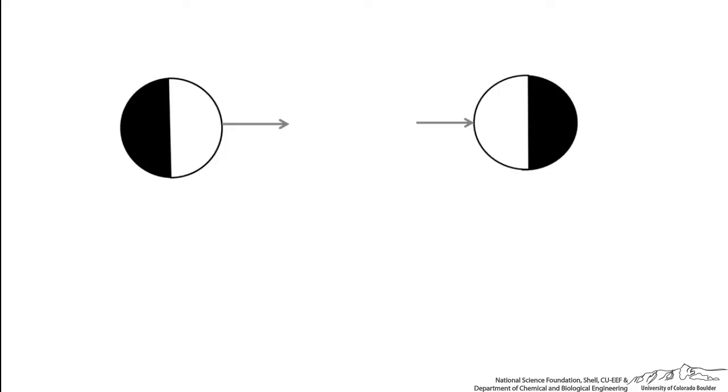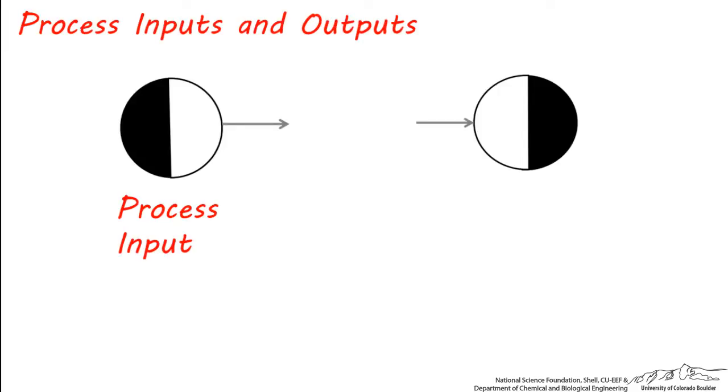These symbols do not represent equipment and are not technically required on a process flow diagram, but you can probably guess their purpose. This is a process input, or some stream that's being introduced to the process, and this is a process output, or some product that's leaving the process.